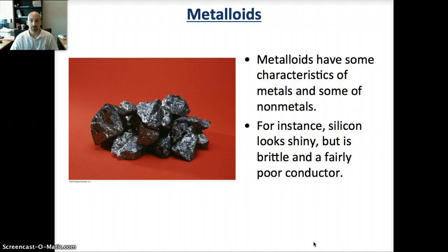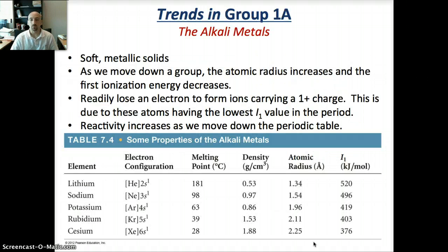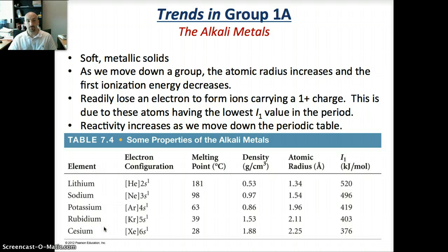Metalloids are part metal, part non-metal, and they have characteristics of both. The last part of this lecture focuses on certain groups of the periodic table. Elements in the same group have very similar properties. Group 1A are the alkaline metals — they all have low densities and low melting points. The reactivity of these metals increases as you move down the periodic table.